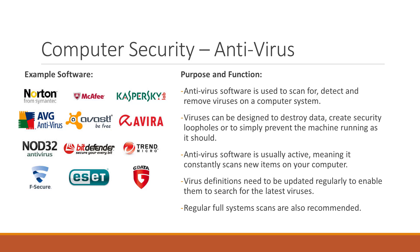Antivirus software is used to scan for, detect, and remove viruses from a computer system. Viruses can basically destroy data on a computer system; they get in using security loopholes and prevent the machine from running as it should. Antivirus software is usually active, meaning it constantly scans for new items on a computer. If you fail to update your antivirus definitions on a regular basis, you will be compromising the security of your computer. You should also regularly scan your system, either manually or by setting up automatic scheduled scans.